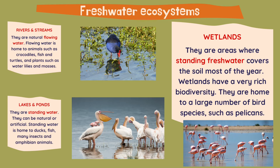And the last type are wetlands. They are areas where standing fresh water covers the soil most of the year. Wetlands have a very rich biodiversity. They are home to a large number of bird species such as pelicans or flamingos. During the dry season, wetlands usually don't have much water.